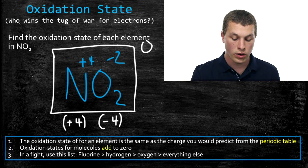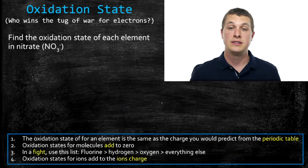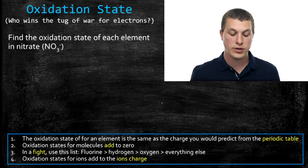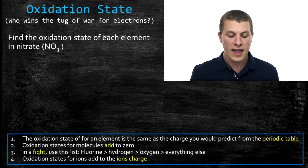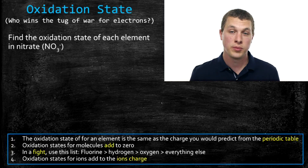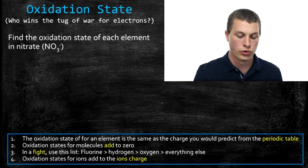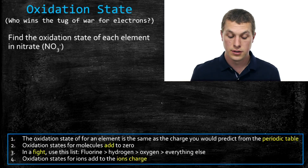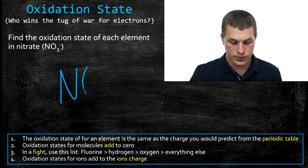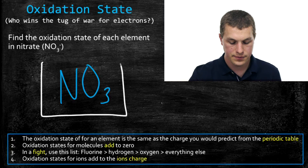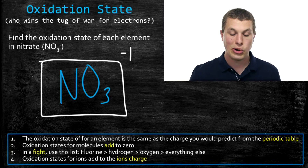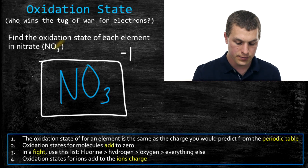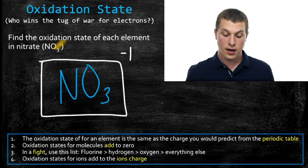Let's add one more rule. Sometimes you're not dealing with a molecular compound — sometimes you have to deal with ions, and ions still have oxidation states. Take NO3 minus, nitrate, which has a charge of negative one. Rule four tells us that the oxidation states for an ion add up to the ion's charge. So instead of the oxidation states adding to zero, they need to add up to negative one, because nitrate has a negative one charge.